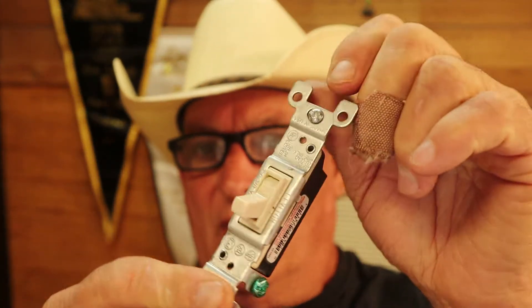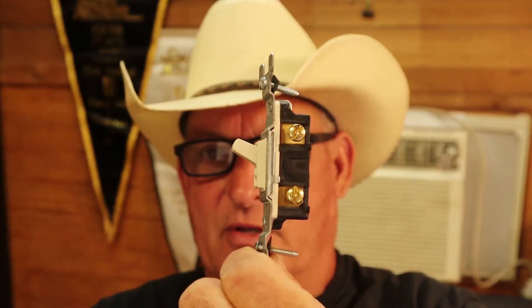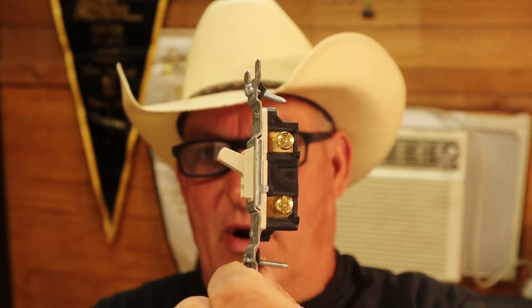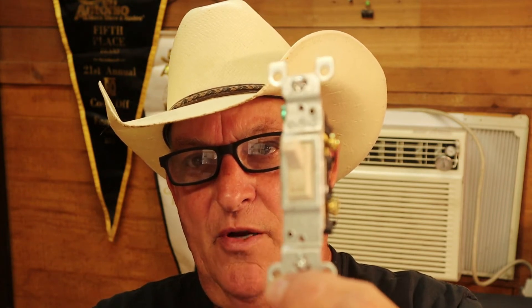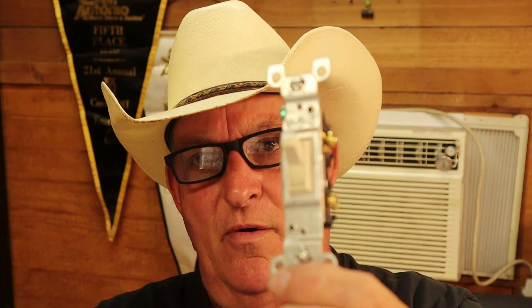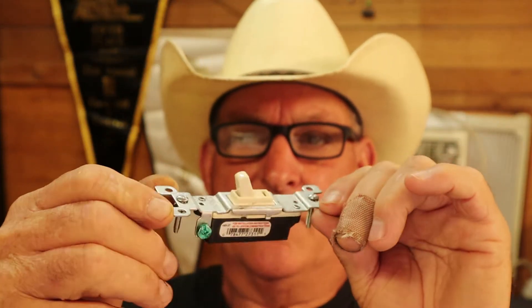Today what we're going to discuss is how to hook up this 15 amp 110 volt light switch. As you see, got two brass terminals on one side, the ground terminal on the opposite side. These things are actually very simple to install. However, before you start, make sure you got the power turned off on any circuit that you're working on. We're not responsible for accidents. There's your switch and we'll show you how to hook her up here shortly.